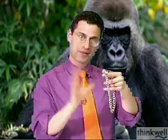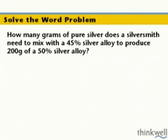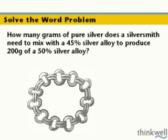So the question is: how much silver to junk should you put in if you want a certain thing? Suppose that for making something like a little doggy chain, you need a certain ratio. The question asks how many grams of pure silver a silversmith mixes together with a 45% silver alloy to produce 200 grams.